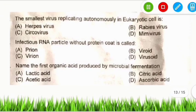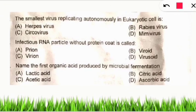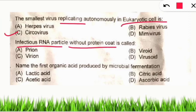Q: The smallest virus replicating autonomously in a eukaryotic cell is known as a sarco virus. Q: An infectious RNA particle without a protein coat is called a viroid.